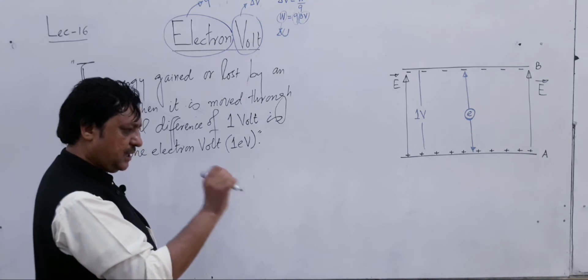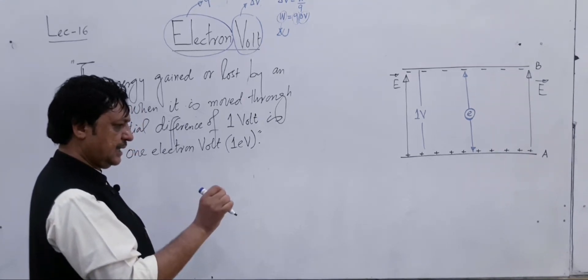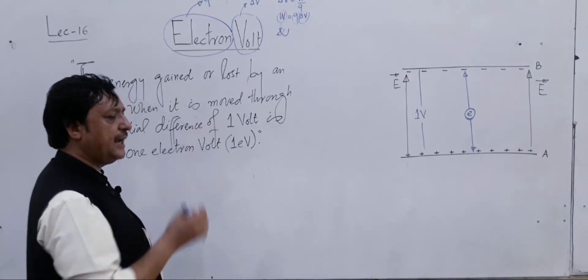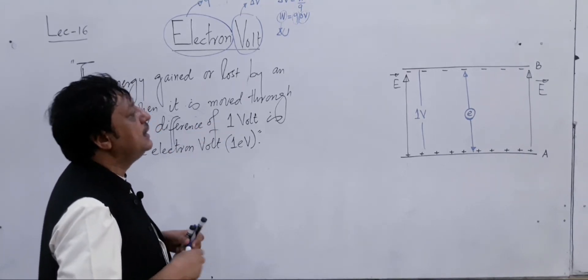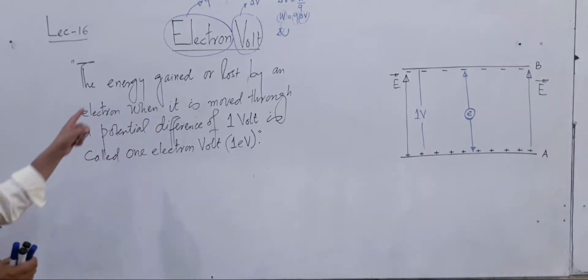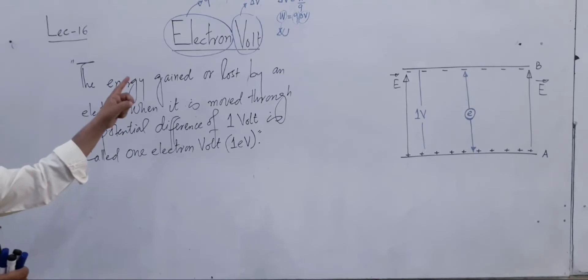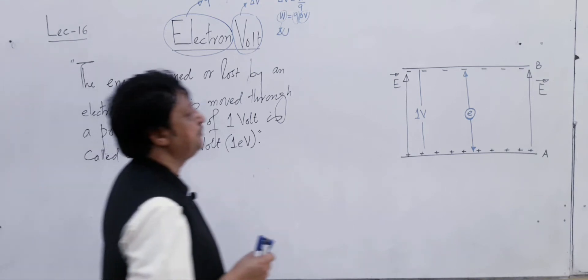This is a microscopic unit of energy. We want to see how much one electron volt energy is, or how many joules it equals. Electron volt kya matlabhe? The energy gained or lost by an electron when it is moved through a potential difference of 1 volt is called 1 electron volt energy. For example,